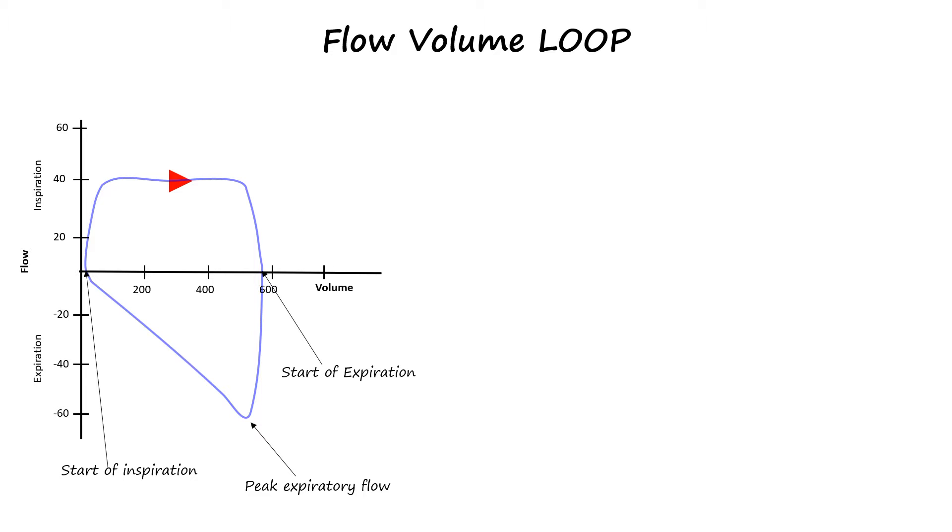In a flow-volume loop, the inspiratory phase is displayed above the horizontal line and the expiratory phase is displayed below the horizontal line.